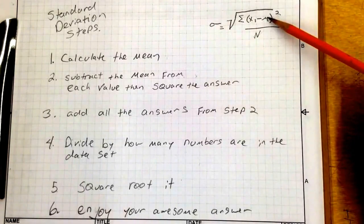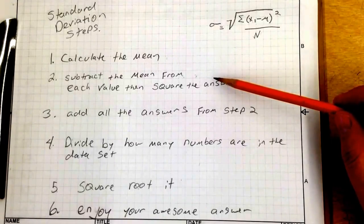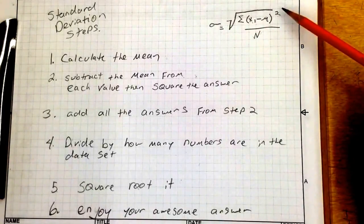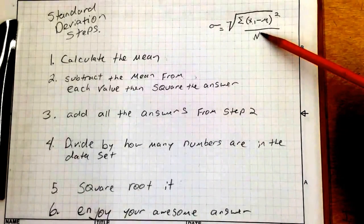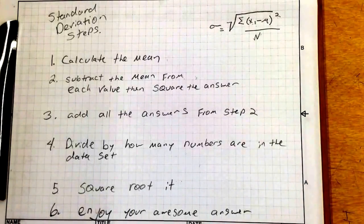So once again, we calculate the mean, that's our first step. Then we have to subtract the mean from each value. Value, subtract the mean, square the answer. Add them all up, divide by how many numbers are in the set, take the square root, and enjoy your awesome answer.